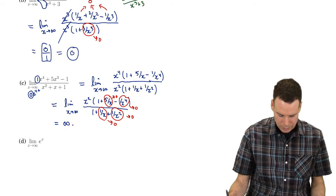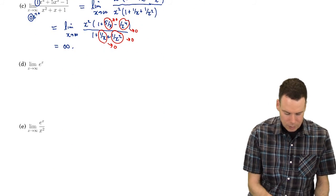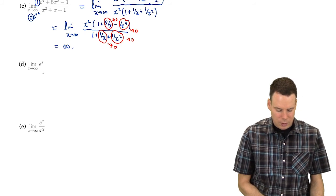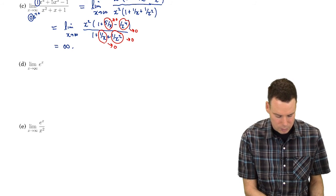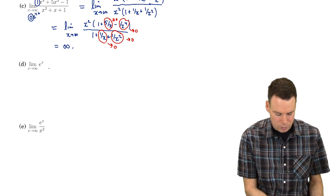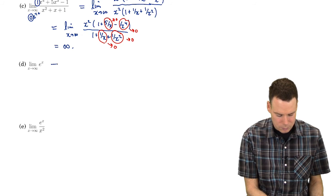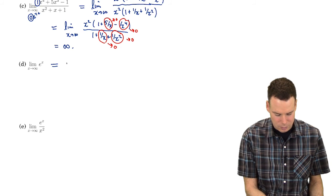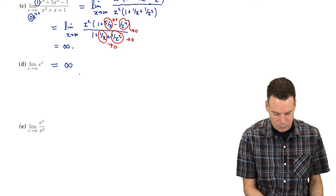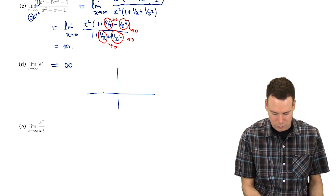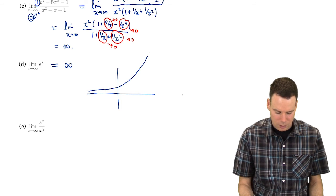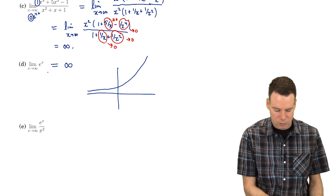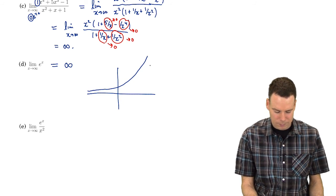Let's look at the last two examples. The limit as x goes to infinity of e to the x — we've already seen this. That's infinity. The exponential function's graph shows that as x goes to infinity, e to the x goes to infinity.